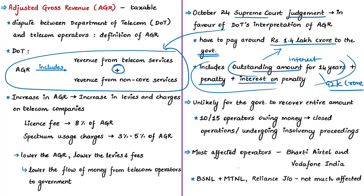However, the government may not recover the entire amount as around 10 of the 15 operators either have closed operations, are in the process of closing, or are undergoing insolvency proceedings. This includes Reliance Communications, Telenor, Tata Teleservices, Aircel, and Videocon. Right now the Indian telecom sector has four major players: Bharti Airtel, Reliance Jio, Vodafone, and state-owned BSNL or MTNL.